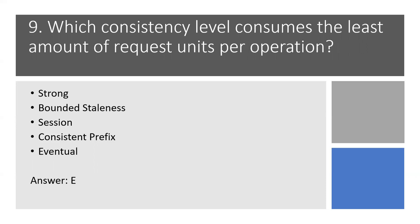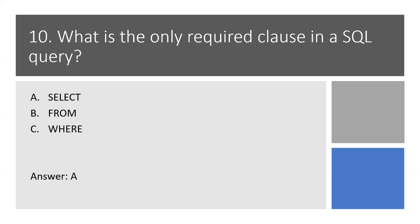Question 10. Which clause is the only required clause in an Azure Cosmos Database query? Option A: SELECT. Option B: FROM. Option C: WHERE. Option C is the right answer — SELECT is the only required clause in a query. You can check my videos; there is one good video session available about Azure Cosmos Database where I created databases and containers, inserted data, and ran some queries. You can check that session for more on the SQL used in Azure Cosmos Database.